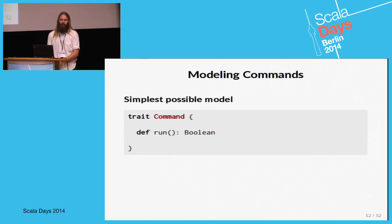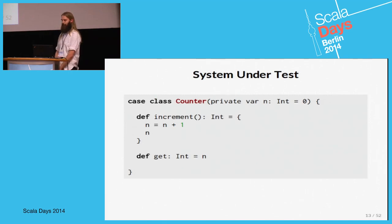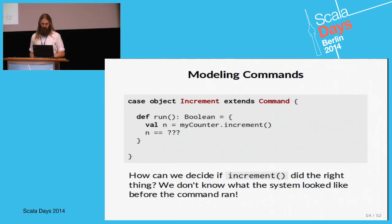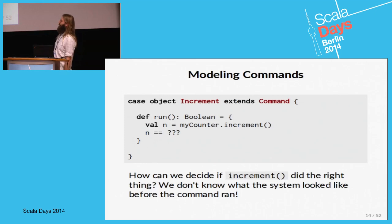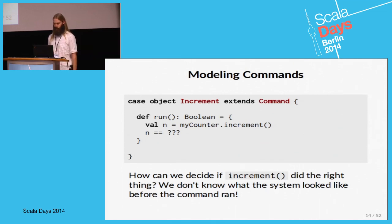The simplest possible model for a command is probably this: a command can run something and it can tell you if it succeeded. Let's see if we can test the simplest possible stateful system — a simple counter with two methods, increment and get. If we define a command that models the increment command, we run into problems because we can execute it but can't verify the result without knowing what the system looked like before.